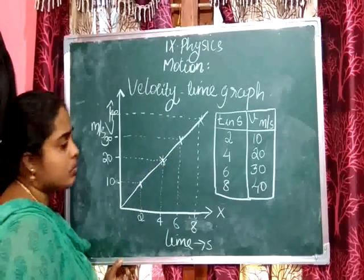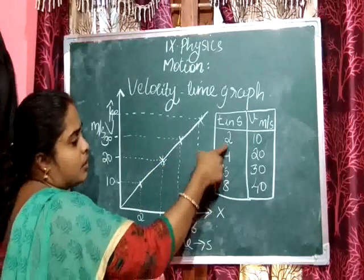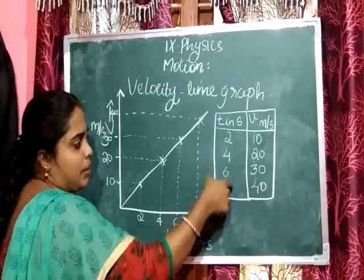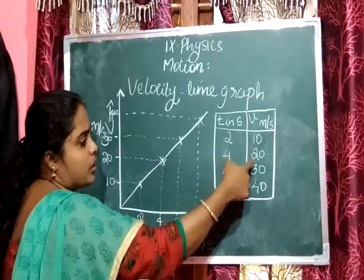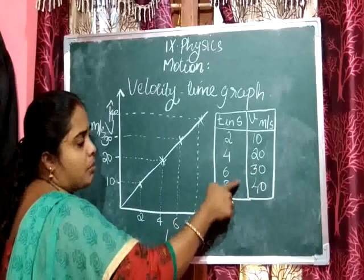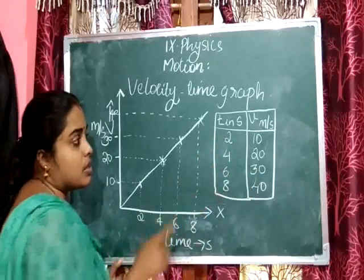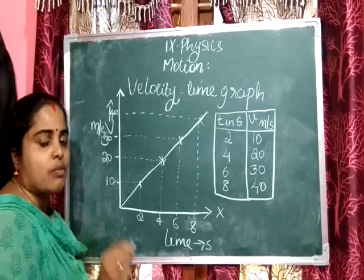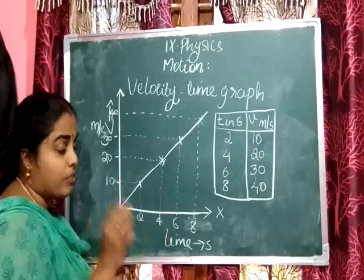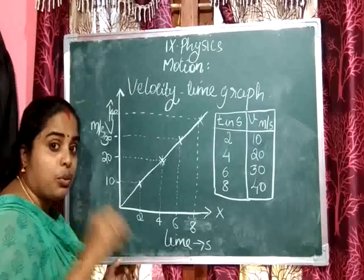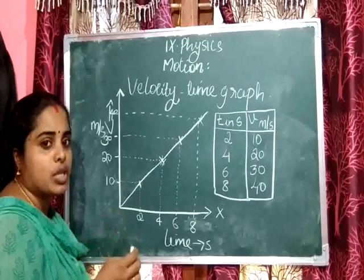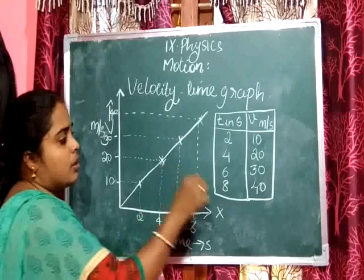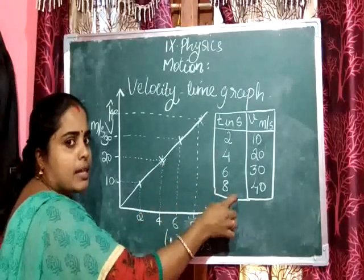From this data, notice the time intervals: 2, 4, 6, 8 — equal time intervals of 2 seconds each. The velocity changes by 10 m/s each interval. If an object changes its velocity equally in equal intervals of time, that motion is said to be uniformly accelerated motion. For all uniformly accelerated motion, the graph is a straight line with slope.